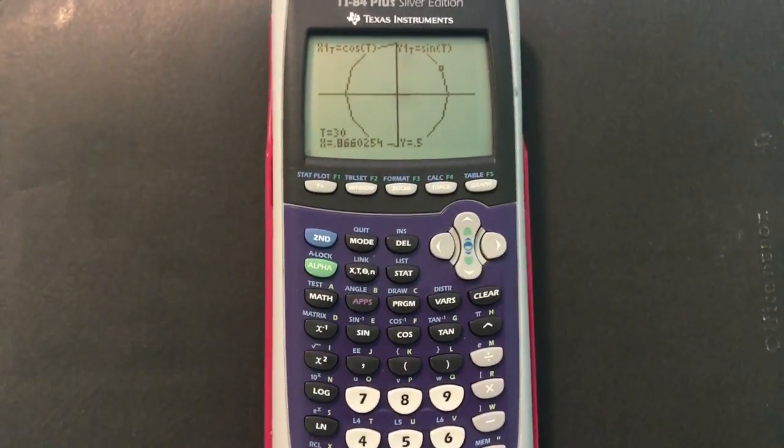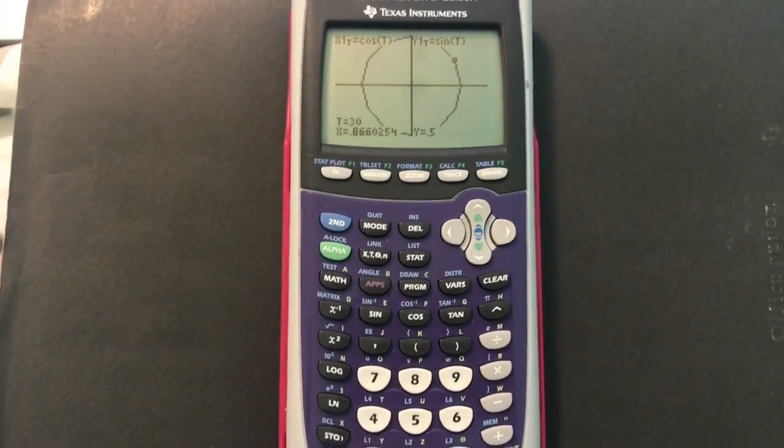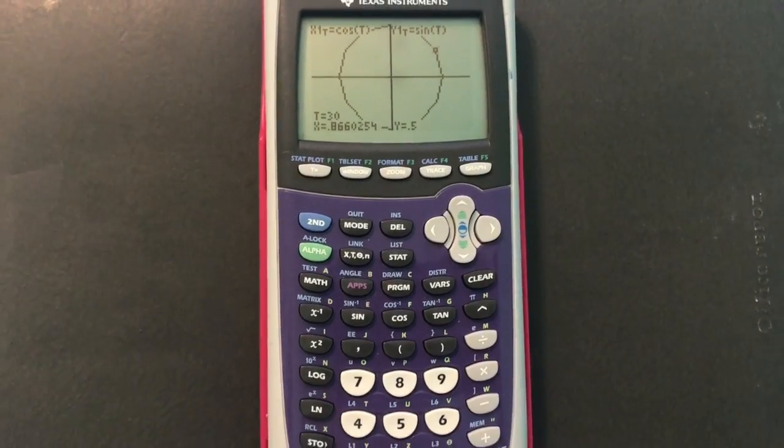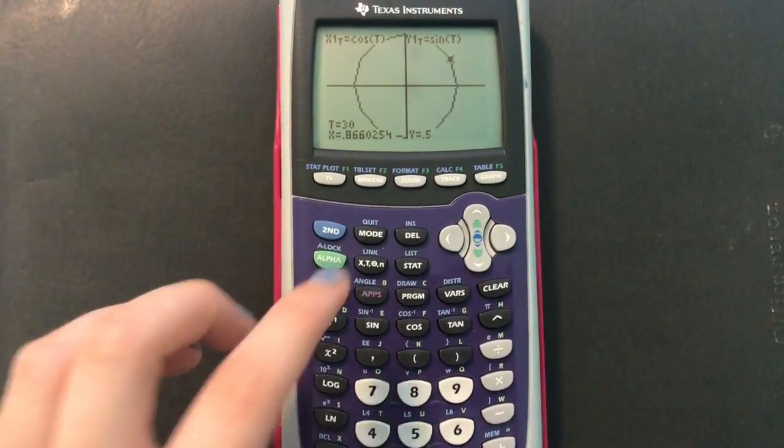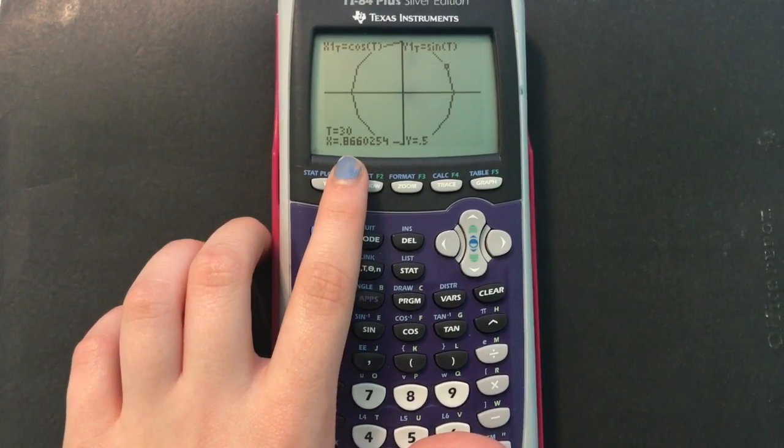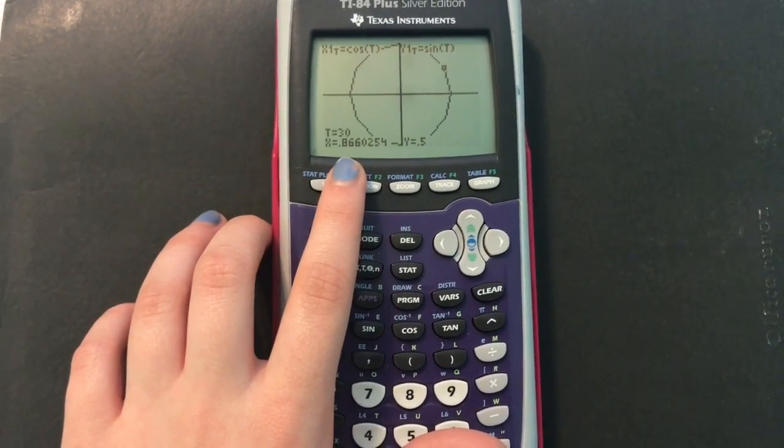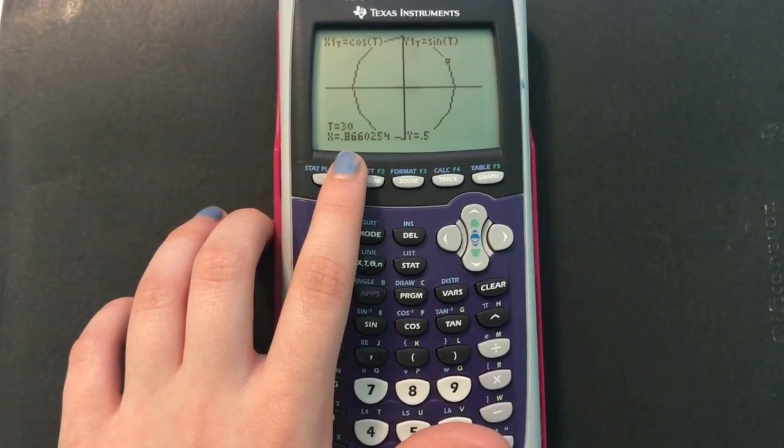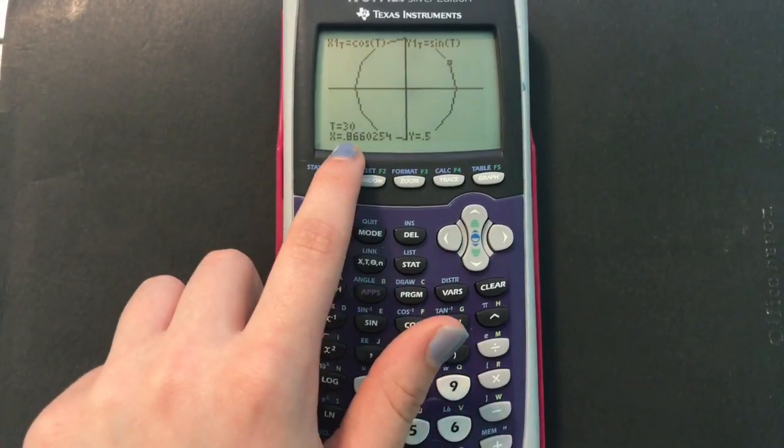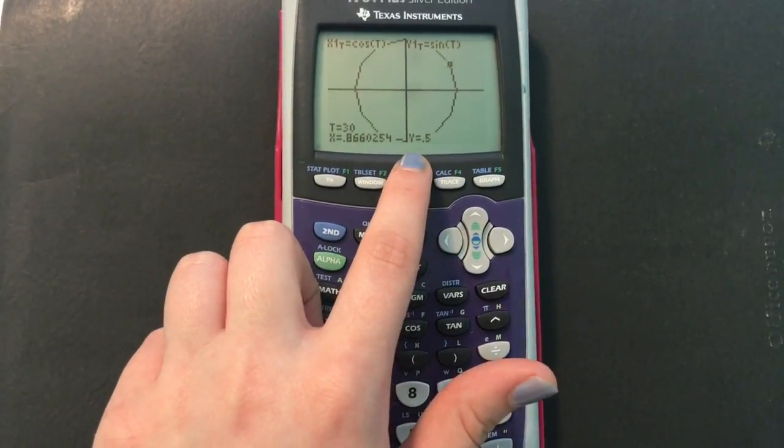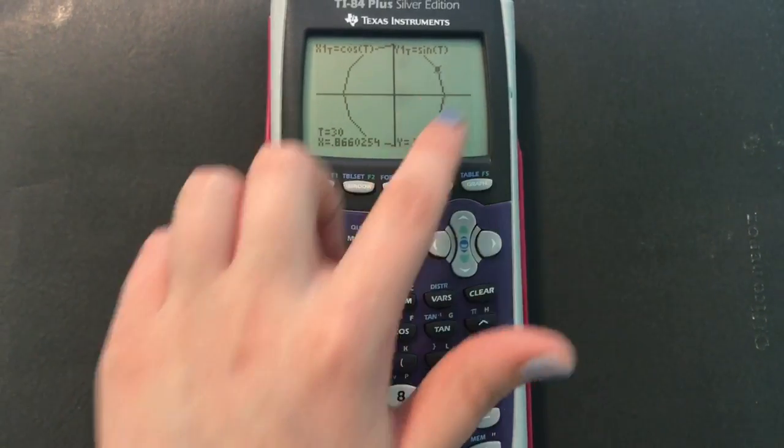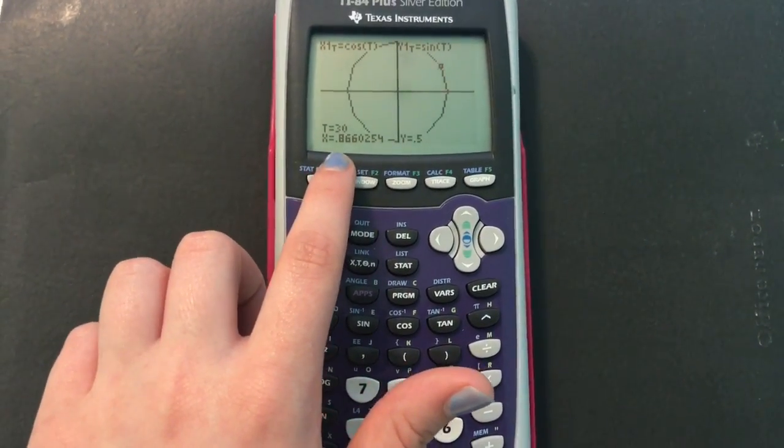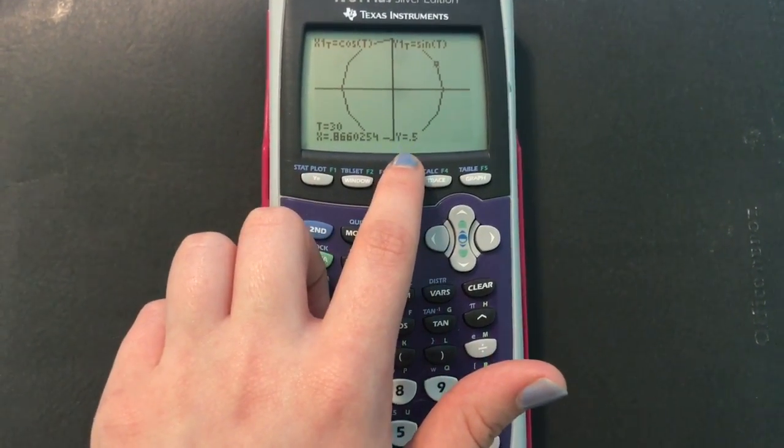So this is more of an easier way to check your work, I suppose, than interpret it in the first place. Unless you're really stuck, then of course you can always use this. So 0.8660254, I believe that's square root of 3 over 2. So that would be the cosine. And then the sine is 0.5, which we know is 1 half. And they're both positive. So the answer for 30 degrees is cosine is square root of 3 over 2, and sine is 1 half.